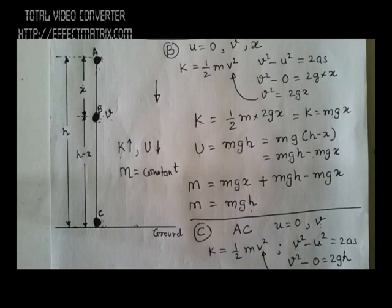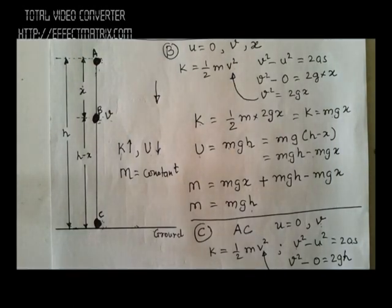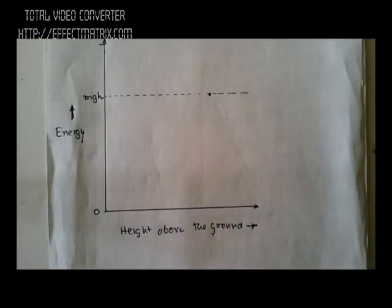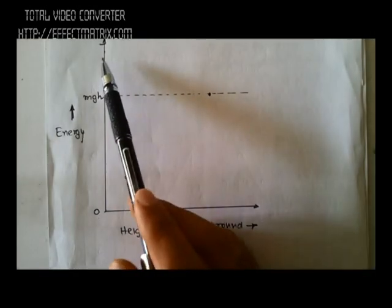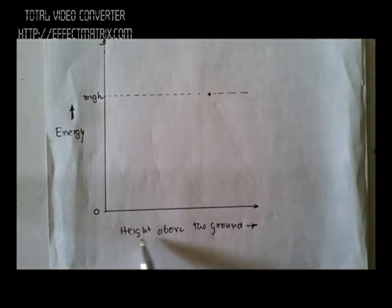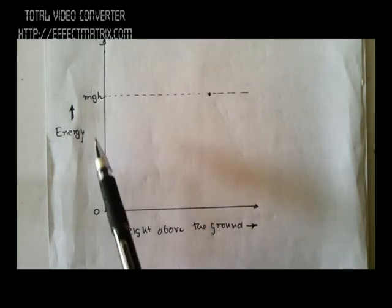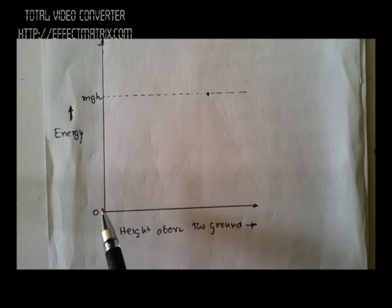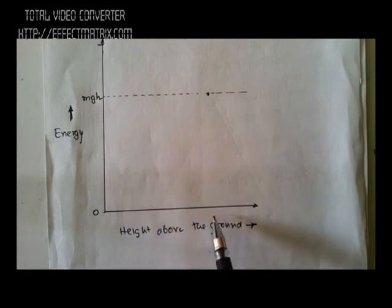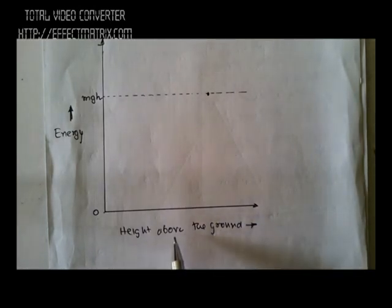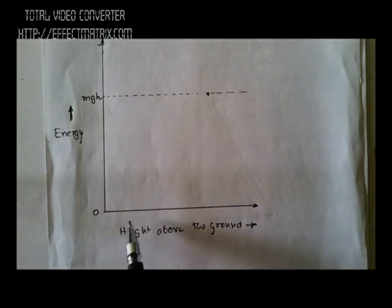Now we will try to plot the values of kinetic energy and potential energy on a chart. We have a graph where the y-axis represents energy and the x-axis represents height above the ground. As we go above the ground — moving in this particular direction — potential energy increases.